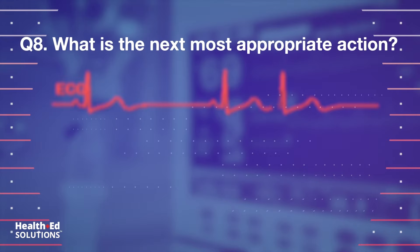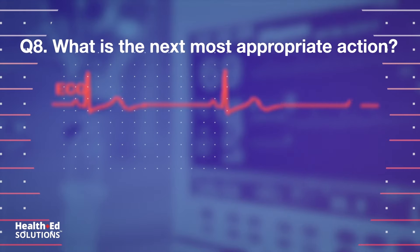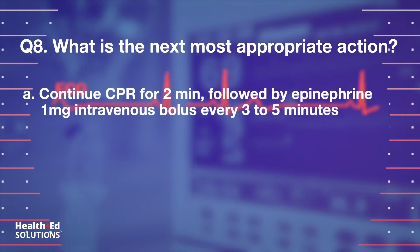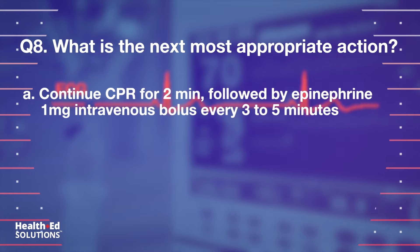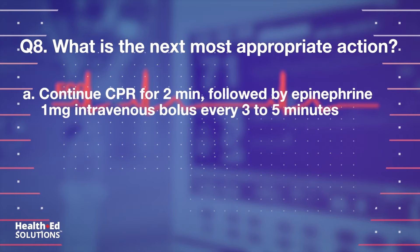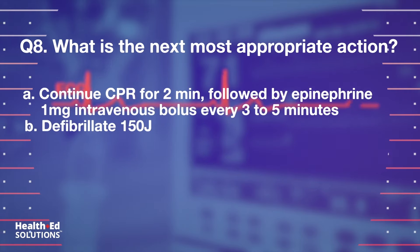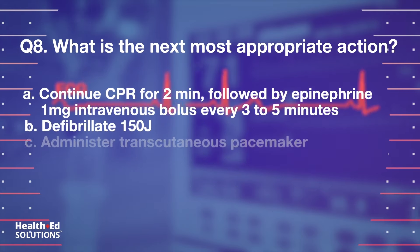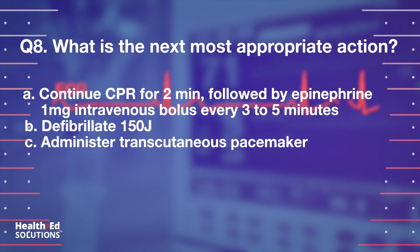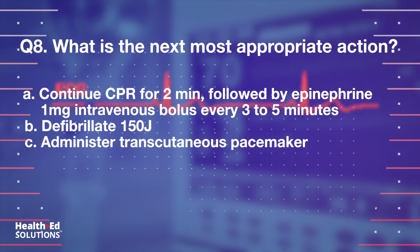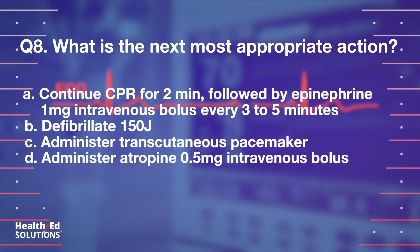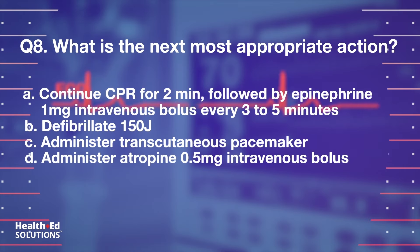Question 8: What is your next appropriate action? A. Continue CPR for 2 minutes, followed by epinephrine 1 mg intravenous bolus every 3 to 5 minutes. B. Defibrillate 150 joules. C. Administer transcutaneous pacemaker. D. Administer atropine 0.5 mg intravenous bolus.